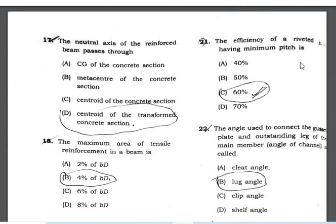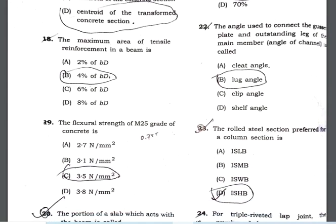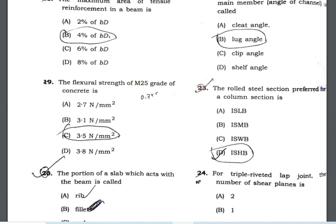The efficiency of a riveted joint is 60%. The angle used to connect the gusset plate and the outstanding leg of the main member is known as the lug angle. The steel section preferred for a column section is ISASB (back-to-back angles).